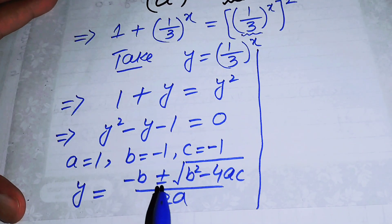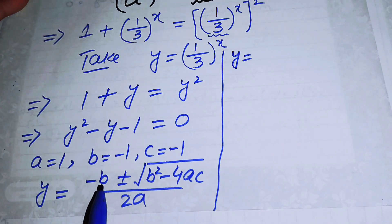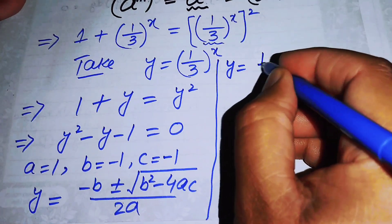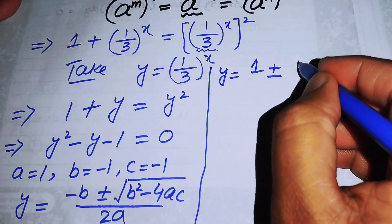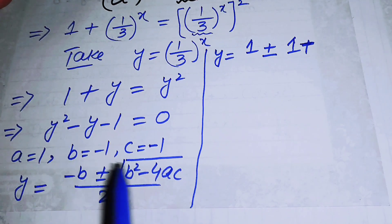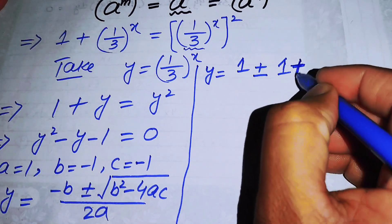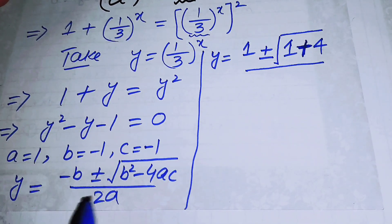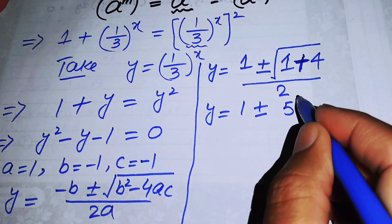Substituting the values: negative b gives plus 1; b squared is (−1)² = 1; 4ac = 4×1×(−1) = −4, so b²−4ac = 1+4 = 5; and 2a = 2. This simplifies to y equals 1 plus or minus the square root of 5, over 2.